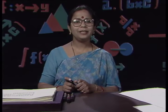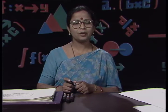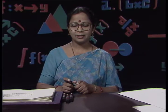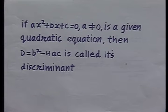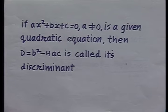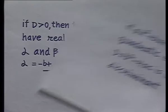Hello viewers. In our previous lesson, we learnt certain facts regarding roots of quadratic equations. We learnt that if ax² + bx + c = 0, where a ≠ 0, is a given quadratic equation, then d = b² - 4ac is called its discriminant.